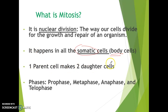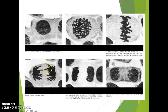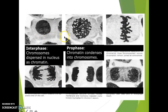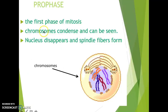One parent cell makes two daughter cells. The phases of mitosis are called PMAT: prophase, metaphase, anaphase, and telophase. This is what they typically look like, and I'll show you some pictures and go over each of these phases.